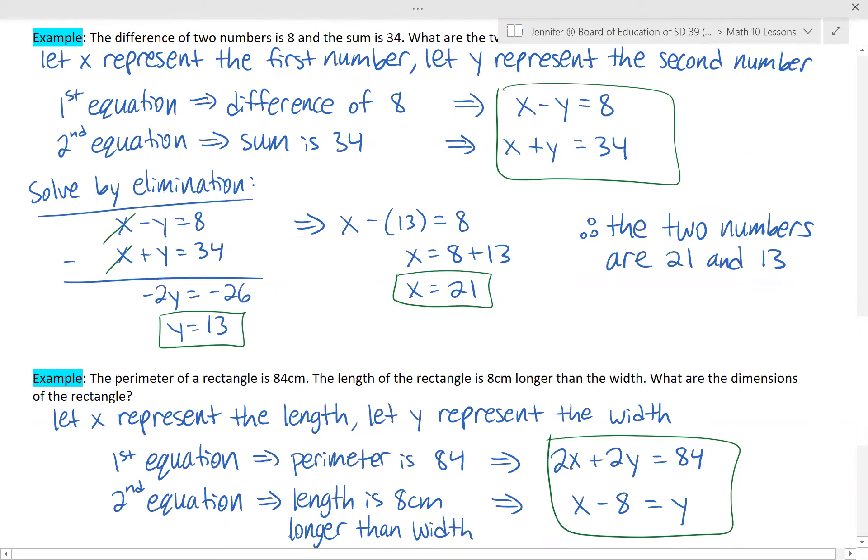For the second equation, what else do we know? We know that the length is 8 centimeters longer than the width. So you could write this a couple different ways. I wrote it as X represents length, so the length minus 8 centimeters is equal to the width. You also could have written it as the width plus 8 centimeters equals X. That's totally fine too. If you just rearrange this equation, that's what you would get. I decided to set it up this way.